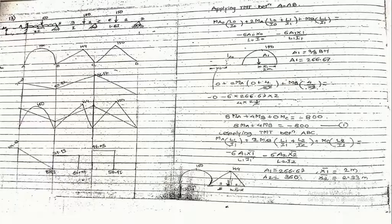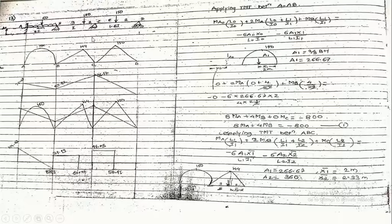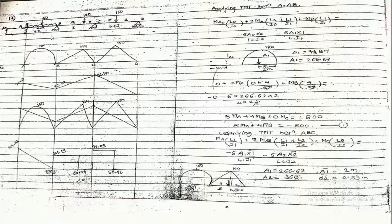The beam is given here with supports A, B, C, and D. Support A is a fixed support; B and C are continuous supports and D is a roller support. Span AB carries a uniformly distributed load of 50 kN per meter over a span of 4 meters.